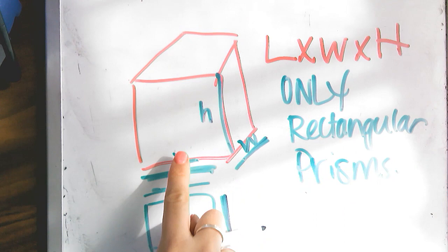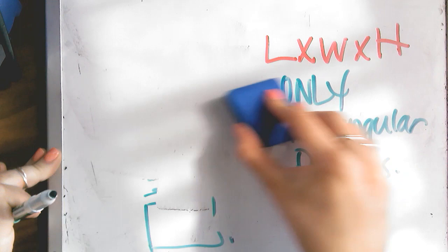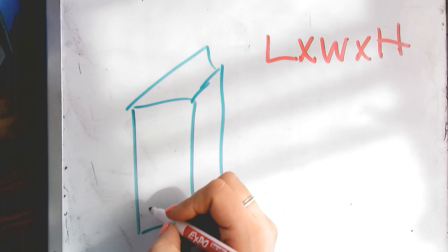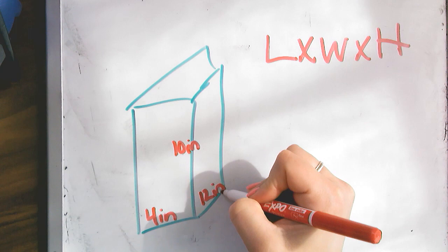So again, they must look like this. So when we apply this formula, there are a few ways that we'll see it. Sometimes they'll give us a rectangular prism and they'll label the sides. And they'll tell us, well, this one is 4 inches, and this one is 10 inches, and this one is 12 inches.